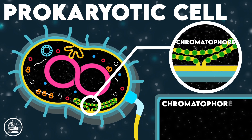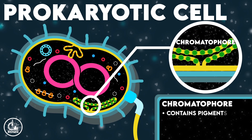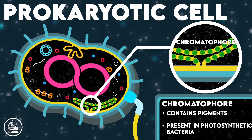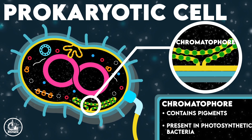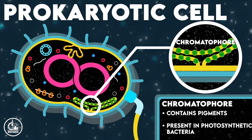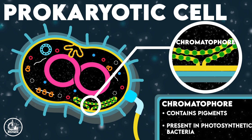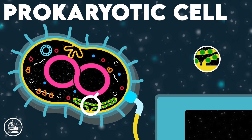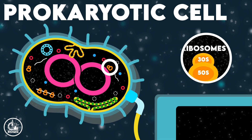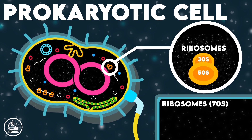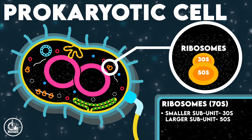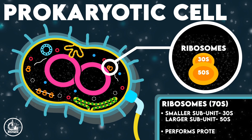Chromatophores are the pigment-containing structures of prokaryotes, also formed by inward folding of the cell membrane. Chromatophores are present in photosynthetic bacteria and blue-green algae. In the cytoplasm of prokaryotes, smaller ribosomes — that is, 70S ribosomes — are present.